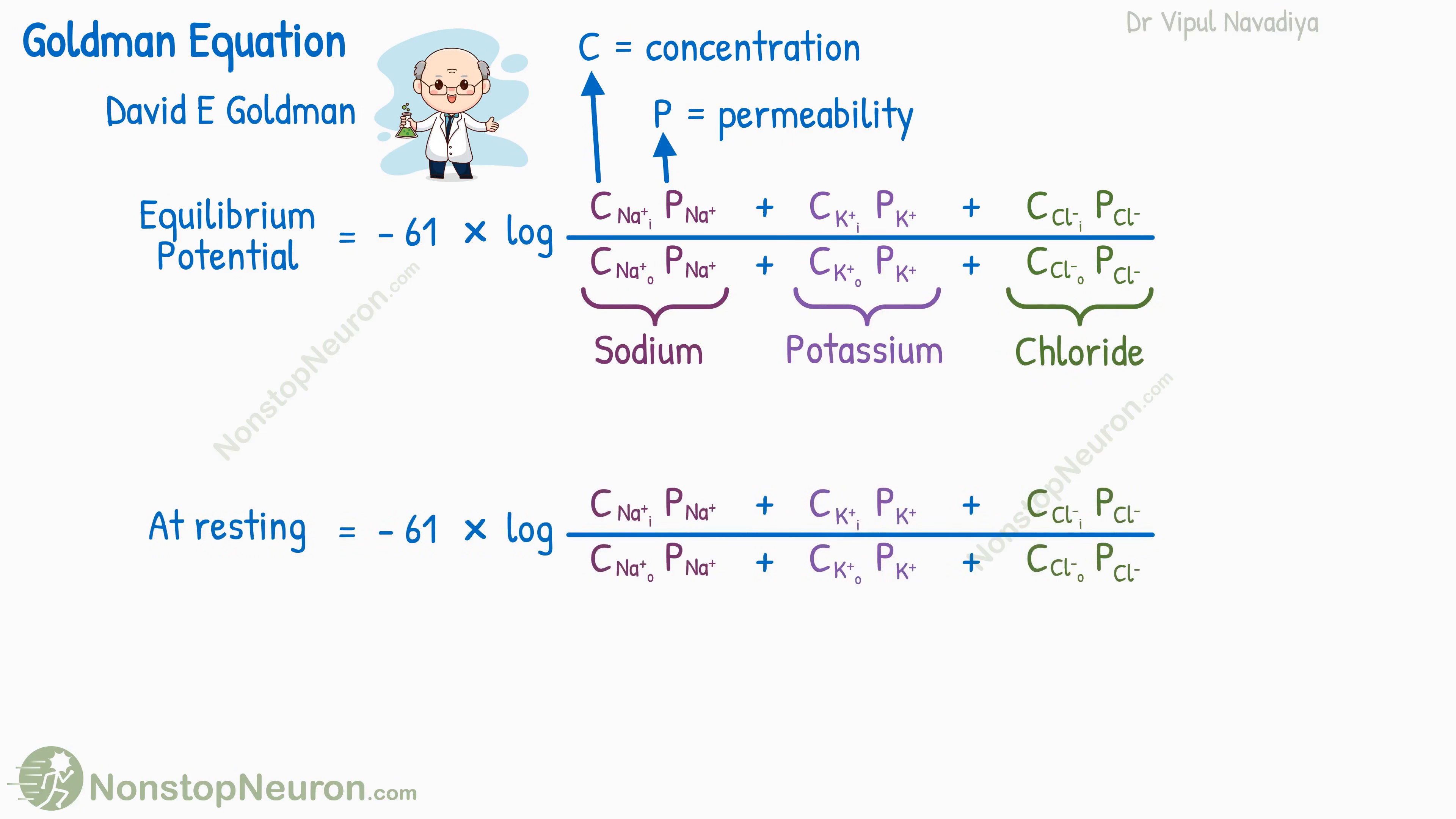Under resting conditions, the membrane is permeable to potassium, but its permeability to sodium is very less. So under resting conditions, the potential is largely determined by the diffusion potential of potassium. That is why the resting membrane potential in most cells is about minus 70 millivolts, which is close to minus 94 millivolts equilibrium potential of potassium.